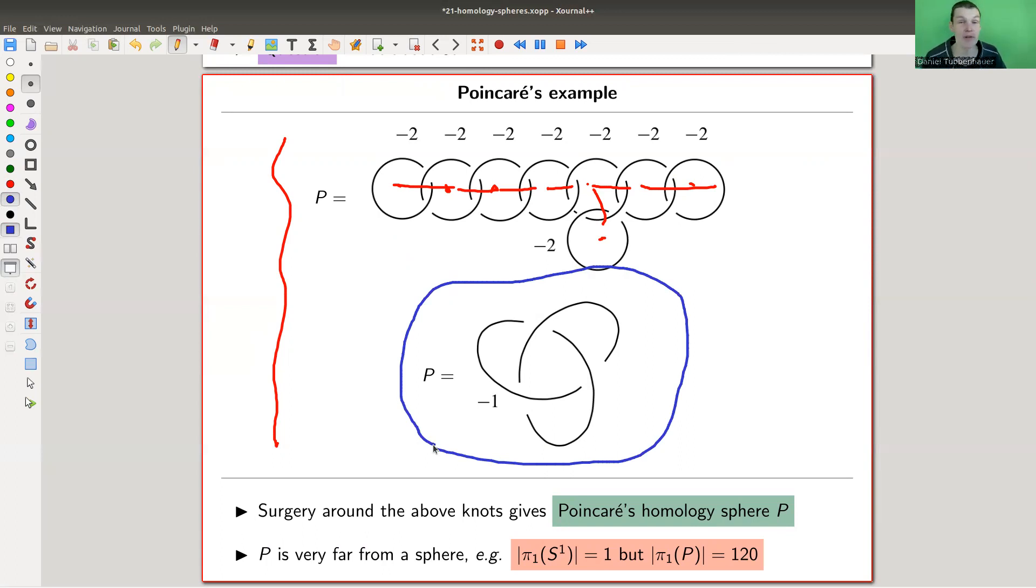But these two give the same space. So the minus one surgery around the trefoil is an example of something that is a homology sphere, but it's certainly not a sphere. So it just has the homology of the sphere, but it's actually very, very far away from being a sphere. So the π₁ of the sphere - so this was S³ - π₁ of S³ is trivial, but π₁ of P is not trivial. It is not a very hard group, but it's still of order 120.